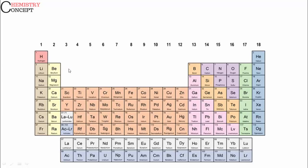Welcome students to Chemistry Concert. We are going to discuss the modern periodic table. In the modern periodic table there are 18 vertical columns called groups and seven horizontal rows called periods. Elements are arranged in increasing order of their atomic numbers. The first element is hydrogen with atomic number 1, then helium with atomic number 2, lithium with atomic number 3, and so on. This entire periodic table is based on electronic configuration.